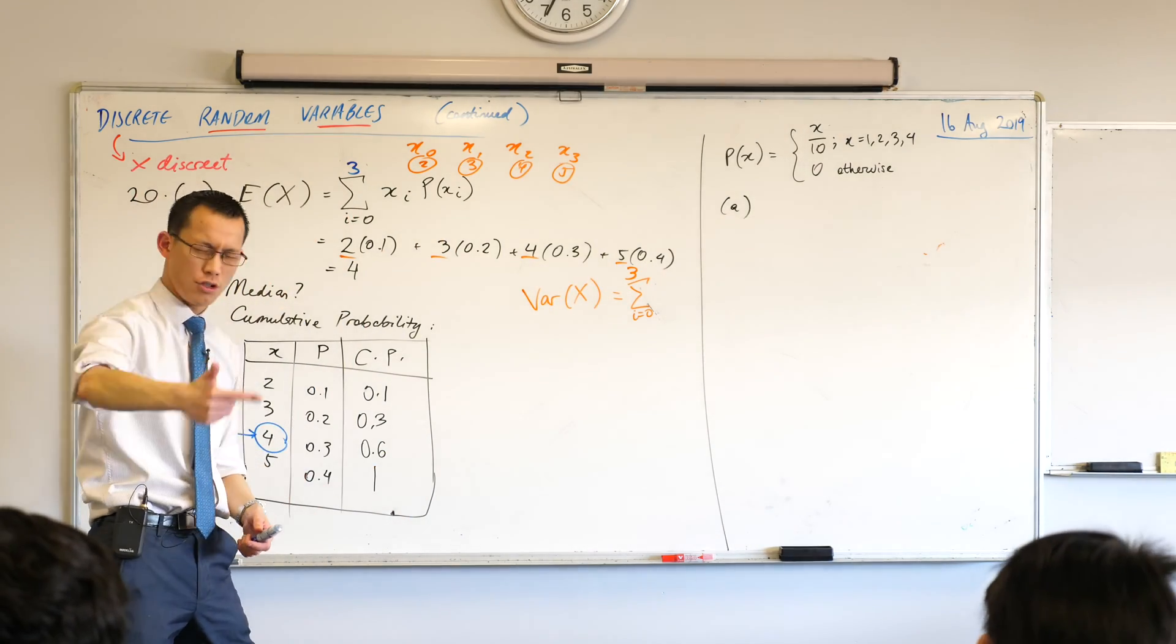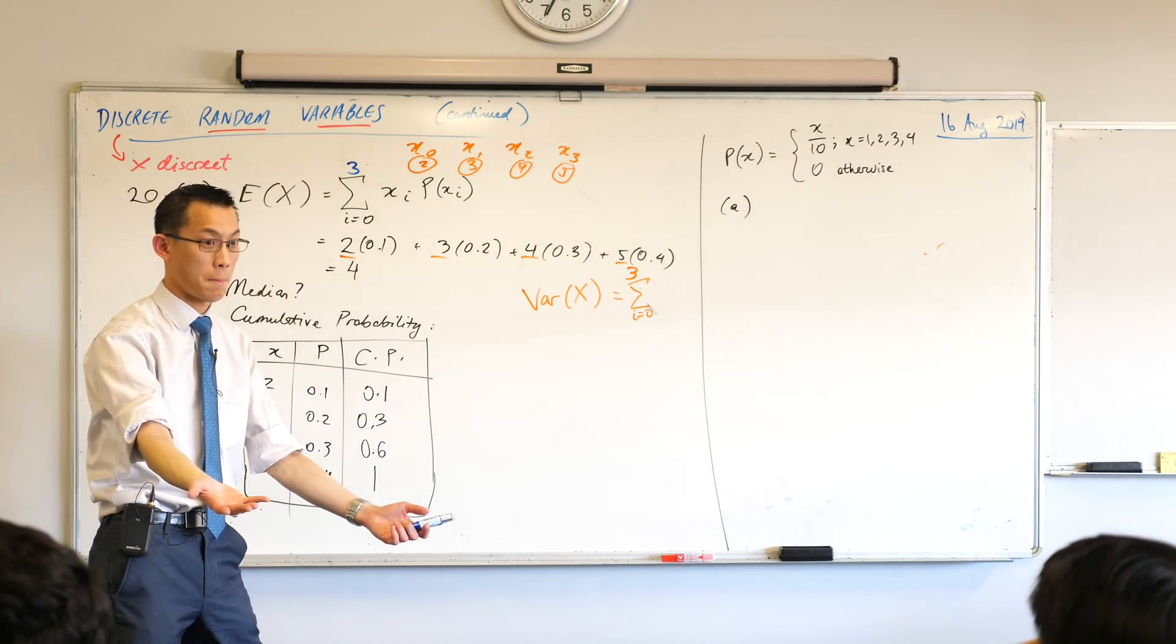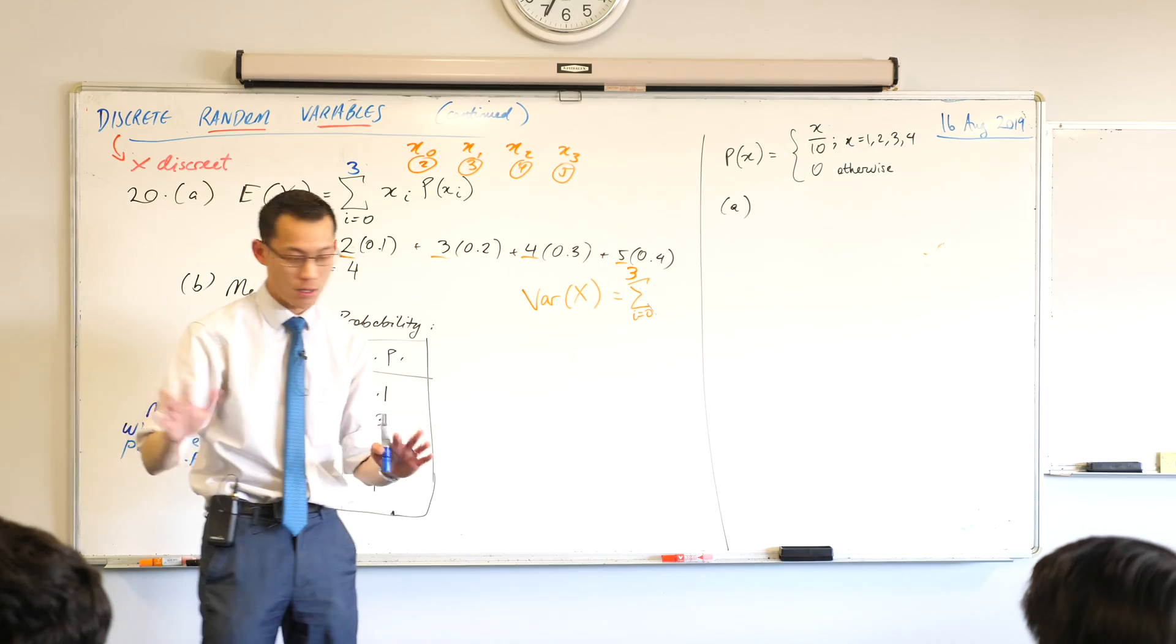Conveniently, 1 tenth plus 2 tenths plus 3 tenths plus 4 tenths, what does it add up to? It adds up to 1, so we've got everything. So far so good?